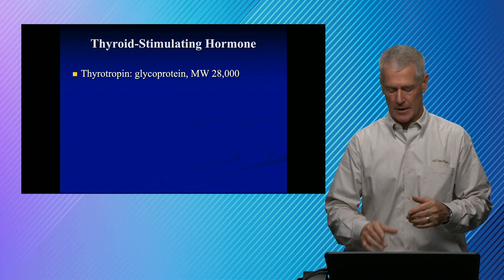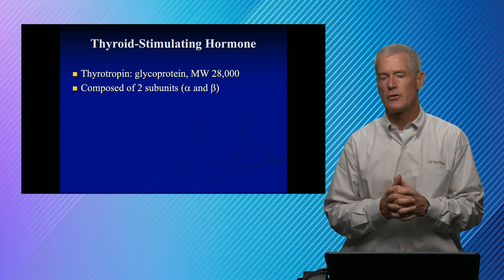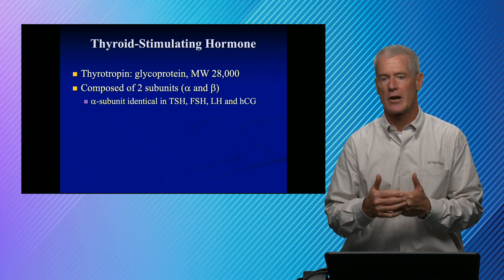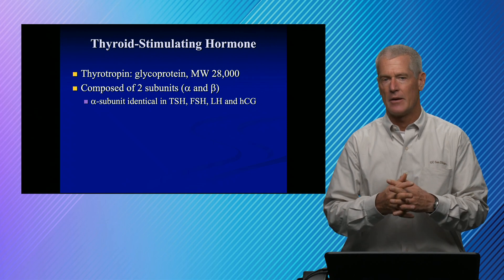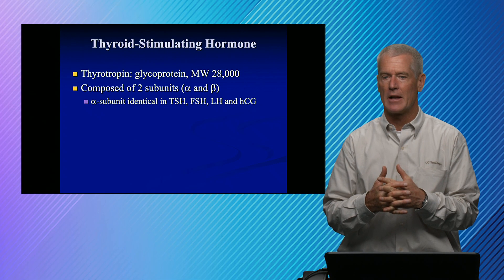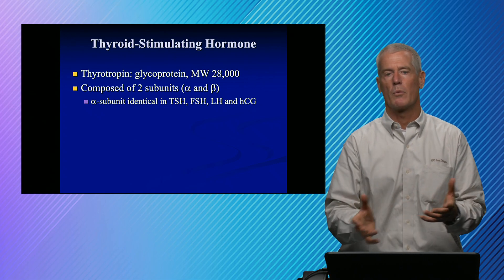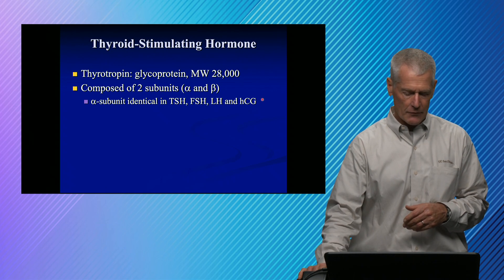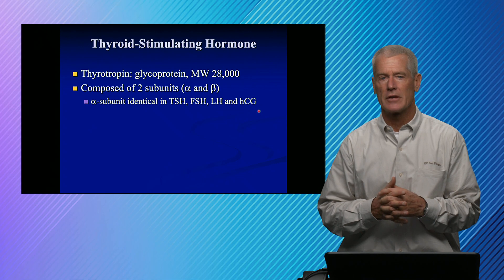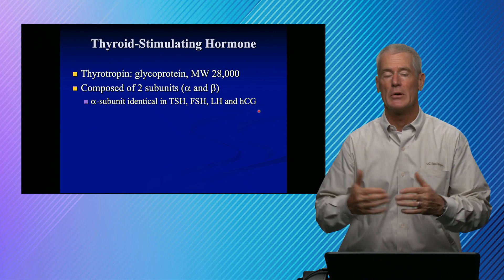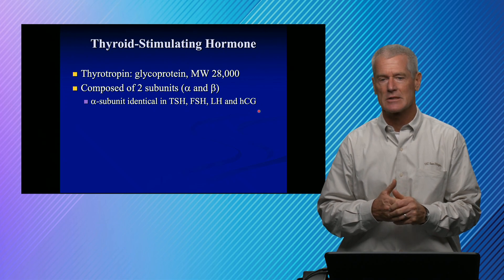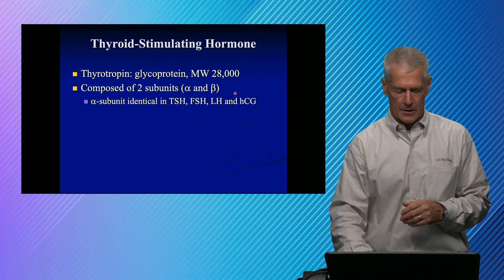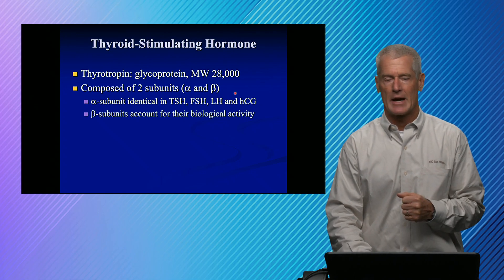TSH has two subunits, alpha and beta. The alpha subunit is shared by FSH, LH, and HCG. The beta subunit provides the primary biological function and distinguishes TSH from the others — that's what we target in measurement. Interestingly, at very high HCG concentrations, such as in trophoblastic disease where HCG can reach the million range, some patients become thyrotoxic due to cross-reactivity of the alpha subunit, causing some stimulation of the thyroid gland.